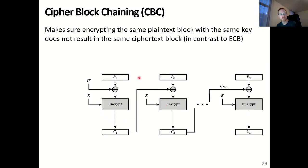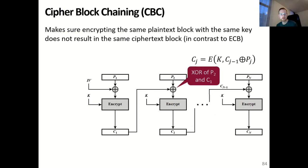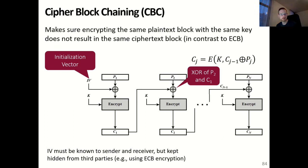The result of this exclusive OR is then encrypted in the same way as before. For the second block, instead of using the initialization vector, we use the result of the first encryption — so cipherblock 1 — and XOR that with plaintext block 2. This process continues in a chain, hence the name cipher block chaining. That means cipherblock Cj equals the encryption using key K of Cj-1 XOR Pj. The initialization vector must be known to both the sender and the receiver and therefore can be shared using ECB encryption, as it is advised to be kept hidden from third parties.